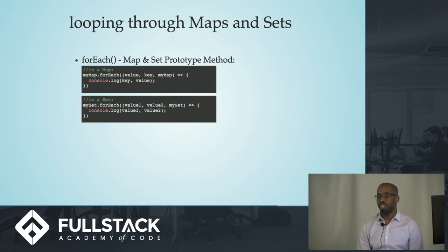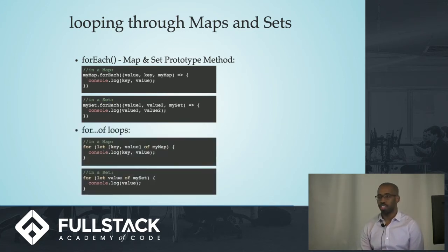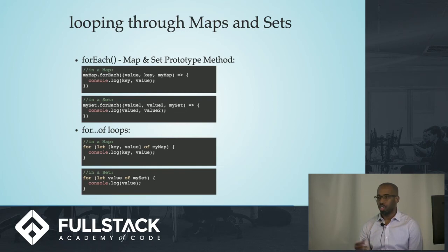To loop through maps and sets, they both have a prototypical forEach method that will iterate through the key-value pairs for a map and the values for a set. There is also the new ES6 for...of loop, which will work on any iterable object. Iterable objects include maps, sets, arrays, and strings. They will also iterate through key-value pairs for maps and values for sets.